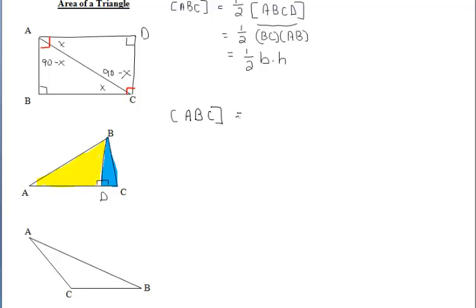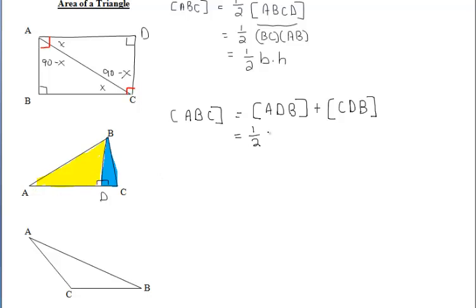So after we drew in that altitude, we then create two right triangles. The area of triangle ABC can be represented by the area of triangle ADB, the yellow one, plus the area of triangle CDB, the blue one. We know how to find the area of triangle ADB since it's a right triangle. So we do one half of our base, which is AD, times our height, which is BD.